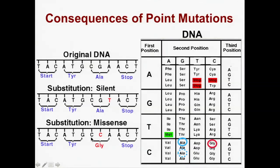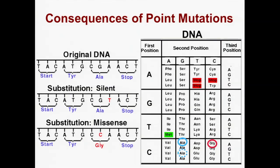On the other hand, if instead of CGA going to CGT — which was silent — we go from CGA to CCA, then CCA codes for glycine. That's different. And now our sequence of amino acids along the protein chain is going to be different. That's a missense substitution.